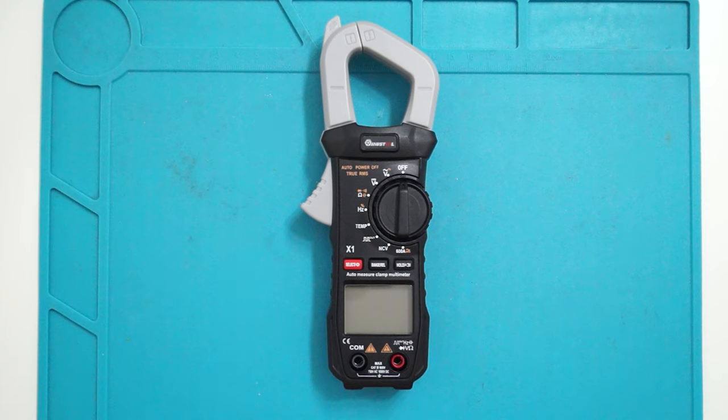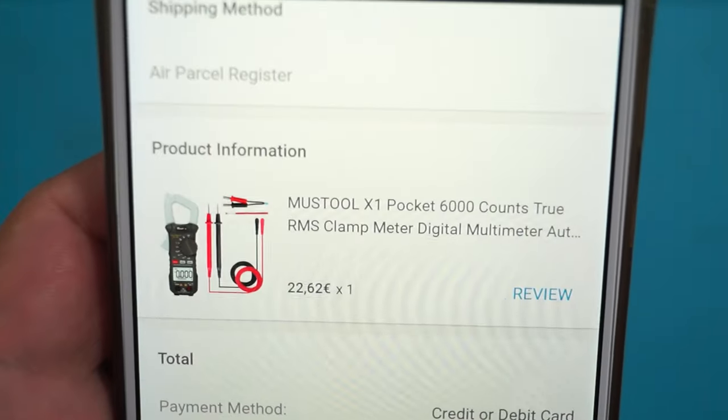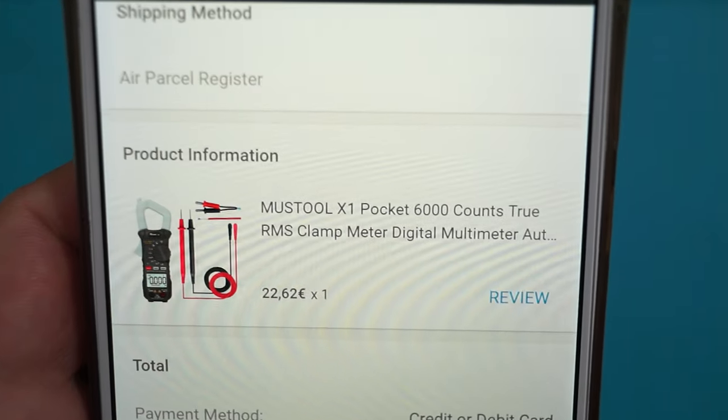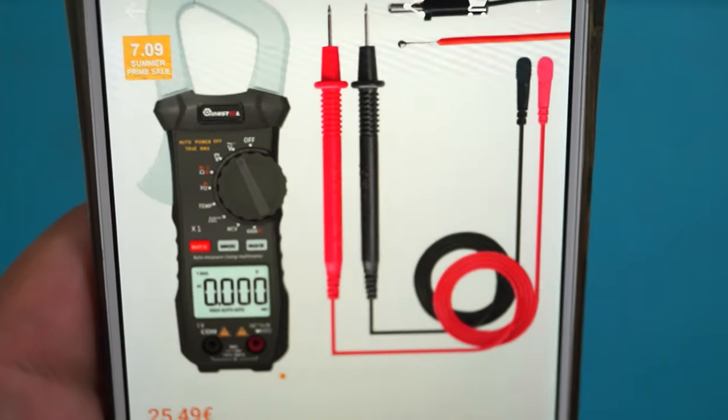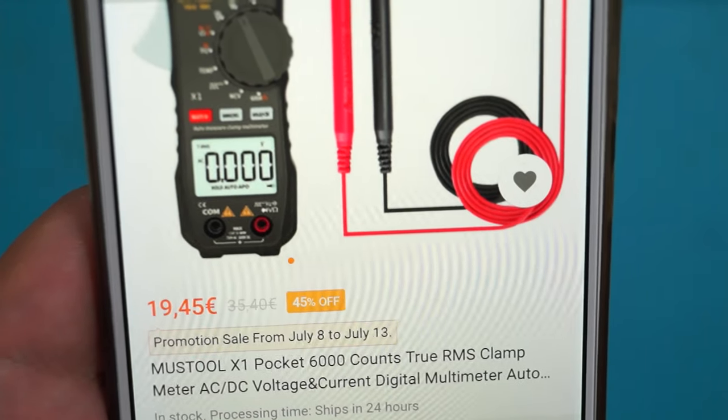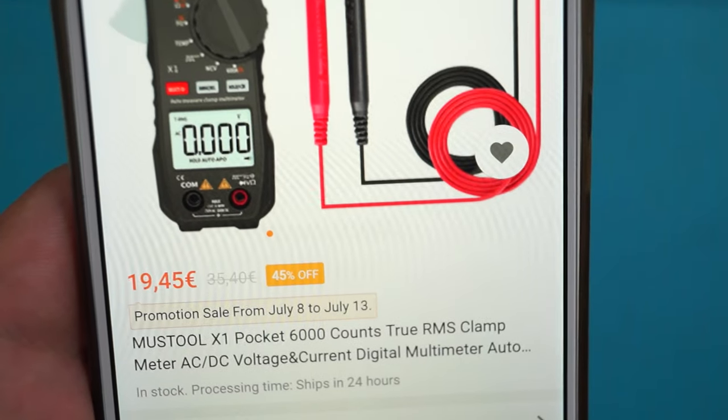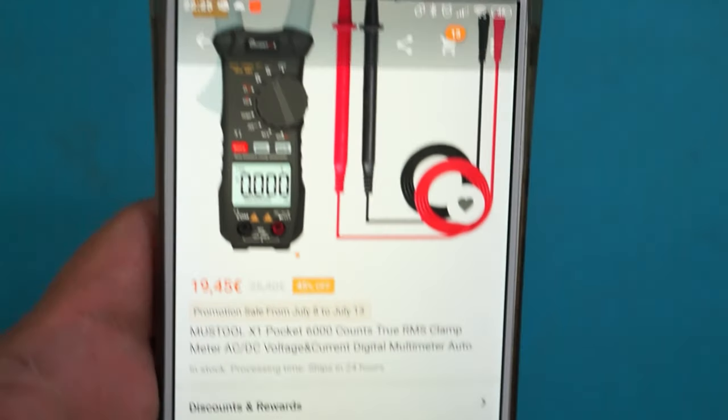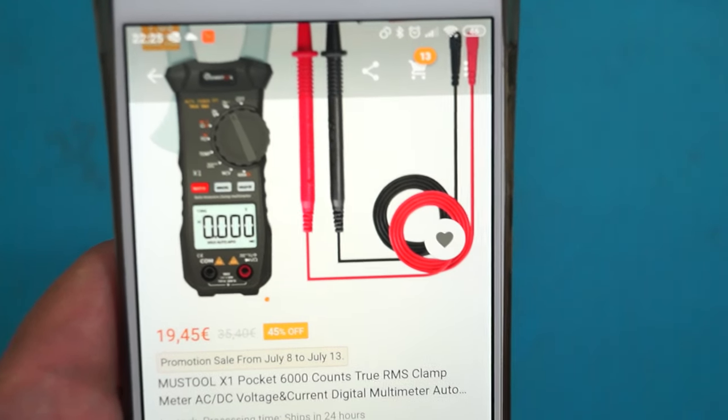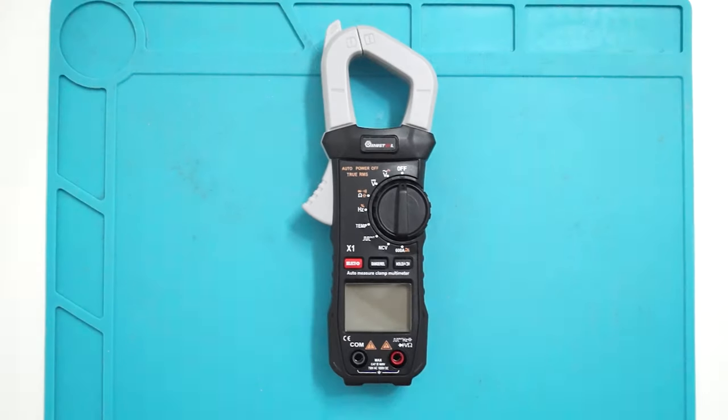Hi guys and welcome to my channel. Today I want to show you the Mastool X1 clamp meter. I bought it from Banggood for 22 euros and 62 cents, but now you can get it for less than that, 19 euros 45. They have a promotion sale from July 8th to July 13th, so if you want to buy it, it's a bit cheaper now.